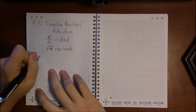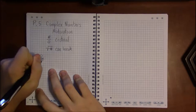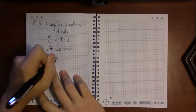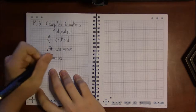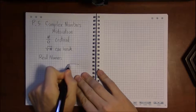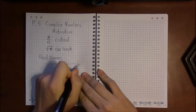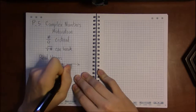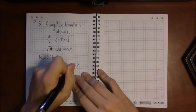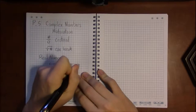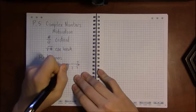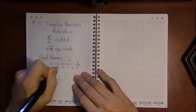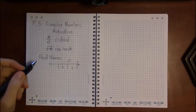What we've been dealing with are unfortunately called the real numbers. The real numbers all lie on the number line — all the familiar faces are here: zero, one, two, pi, square root of two, negative numbers. Anything on this number line is a real number.